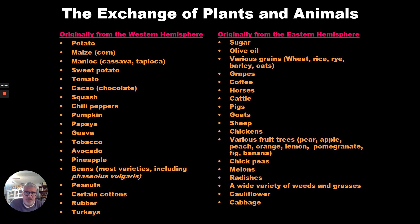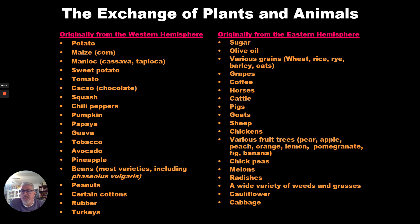Cocoa and chocolate became staple foods all over Europe. Squash, chili peppers, and pumpkins became famous in India. Papaya, guava, tobacco — which is going to hurt the health of Europeans — avocados, pineapple, beans, peanuts, cotton, rubber, and turkey all went from America all the way to Europe.